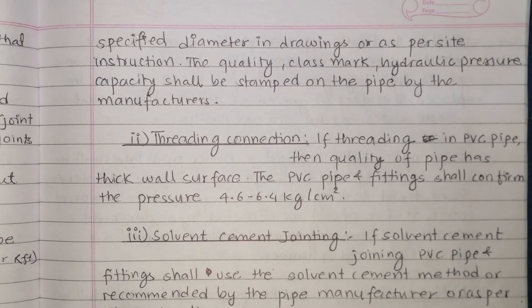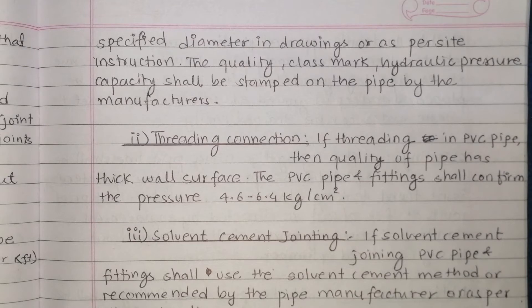The quality of pipe is defined by thick wall surface. The PVC pipes and fittings shall confirm to a pressure of 4.6 to 6.5 kg per cm².